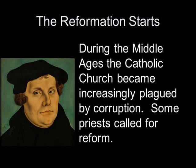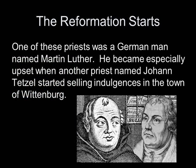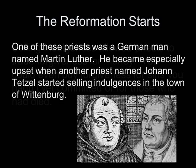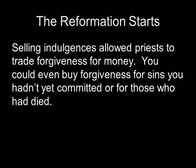During the Middle Ages, the Catholic Church became increasingly plagued by corruption. Some priests called for reform. One of these priests was a German man named Martin Luther. He became especially upset when another priest named Johann Tetzel started selling indulgences in the town of Wittenberg. Selling indulgences allowed priests to trade forgiveness for money. You could even buy forgiveness for sins you hadn't committed yet, and buy forgiveness for people who had already died.